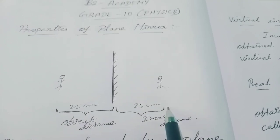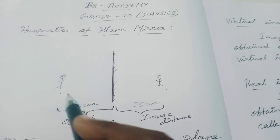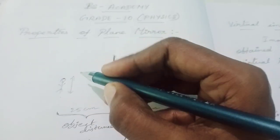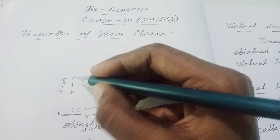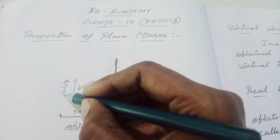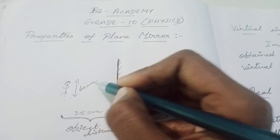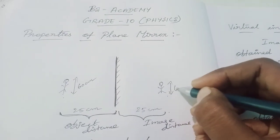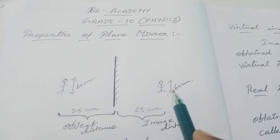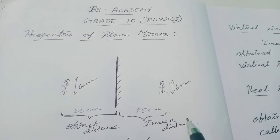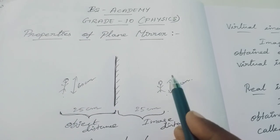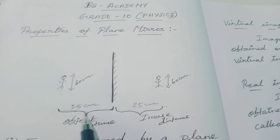In the same way, if the height of this person is 60 centimeters, then the image height will also be equal to 60 centimeters. So the size of the object is equal to the size of the image. Note this second point: the height of the object is equal to the height of the image, and the object distance is equal to the image distance.